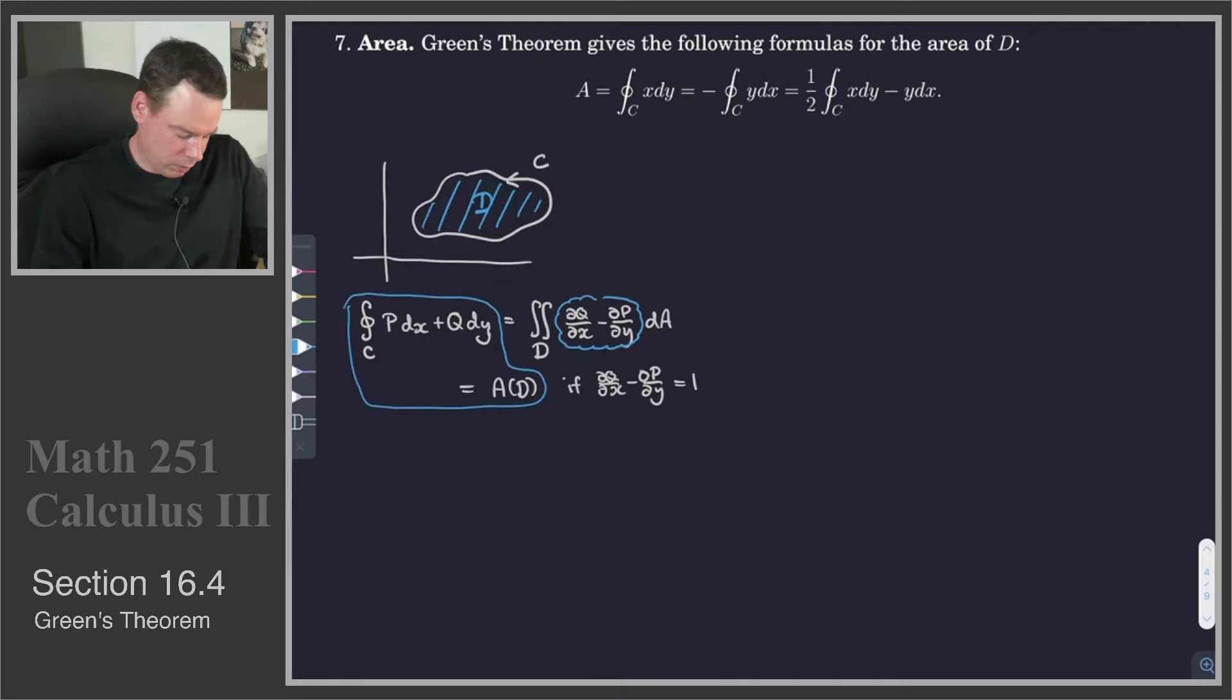The strategic choice of P and Q means we just need to choose P and Q such that this equation is true, dQ/dx minus dP/dy is 1.